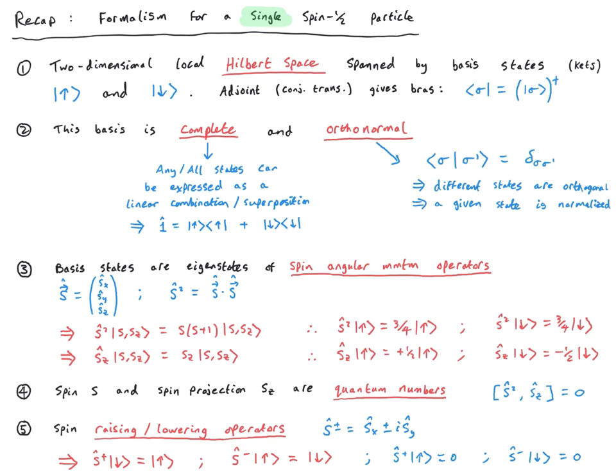So let's get down to work. Before we discuss the formalism for two spins or two qubits, let's recap the formalism for a single spin-half particle. First of all we note that we have a two-dimensional local Hilbert space spanned by basis states. For a single spin-half particle we have an up or a down spin. In Dirac bracket notation, this up and down spin are given by these kets — an up arrow for up spin and a down arrow for down spin.